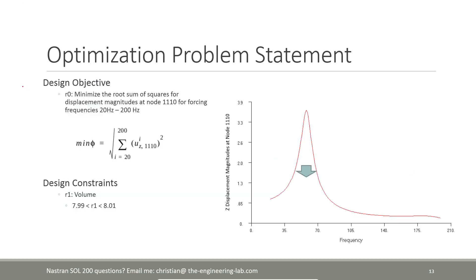Now let's talk about the second component of the optimization problem statement: the design objective. We want to minimize the displacement curve for node 1110. The objective should always be one single quantity, but when you perform your analysis you actually get data for each forcing frequency. So how do you express this curve in terms of one single quantity?